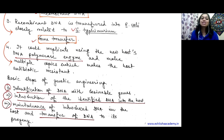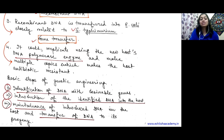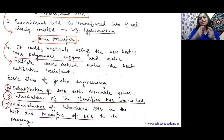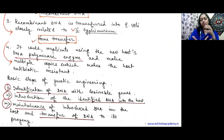The recombinant DNA can now replicate using the new host E. coli's DNA polymerase enzyme. DNA polymerase enzyme is very, very necessary for DNA replication - without it, replication cannot occur. So using E. coli's DNA polymerase, multiple copies are made, and this makes the host antibiotic resistant - because we have put the antibiotic-resistant gene into it. E. coli, which was not antibiotic resistant before, now has the recombinant DNA containing the antibiotic-resistant gene, so it becomes antibiotic resistant.